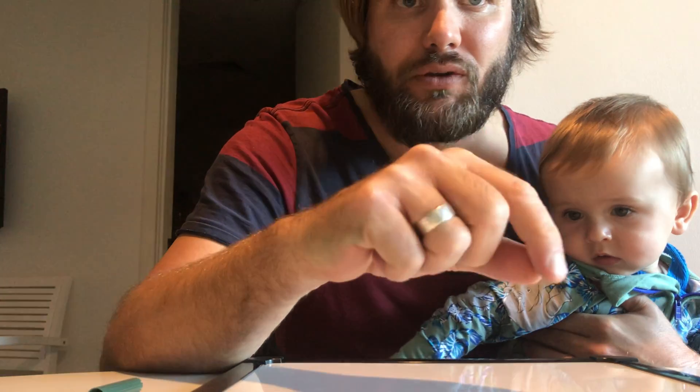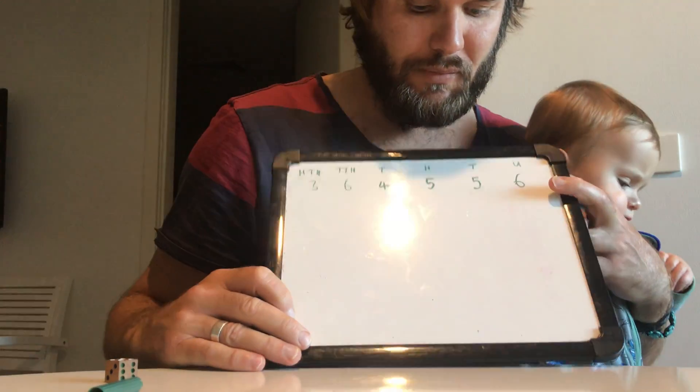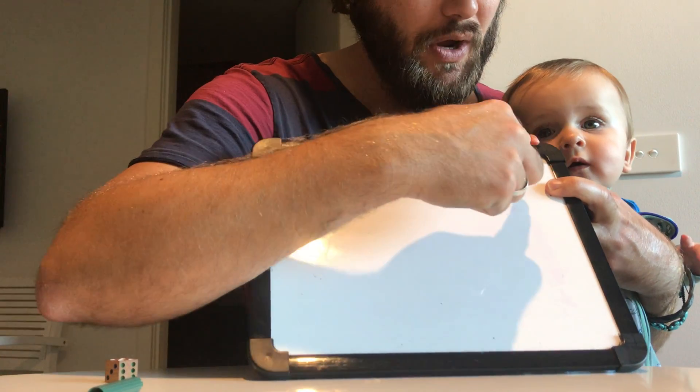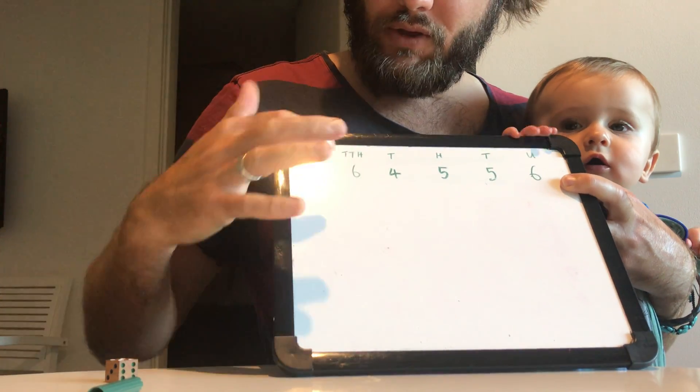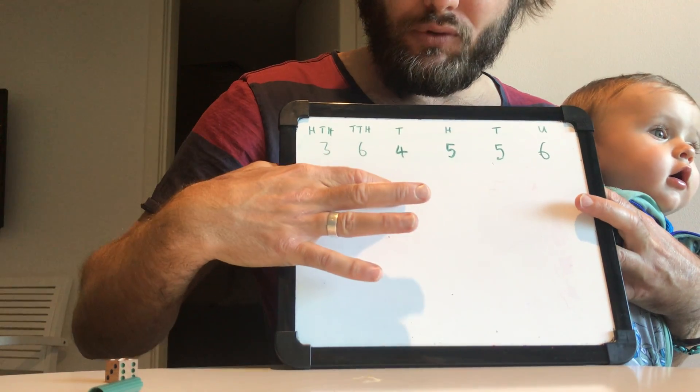Now roll a dice to choose which digit position to round. If the student is only working with three numbers, write one, two, three on paper and pick one. We're using a six-sided dice for our six-digit number. I rolled a five, so starting from the right — from the units — I count five places: one, two, three, four, five. That's my identified number.